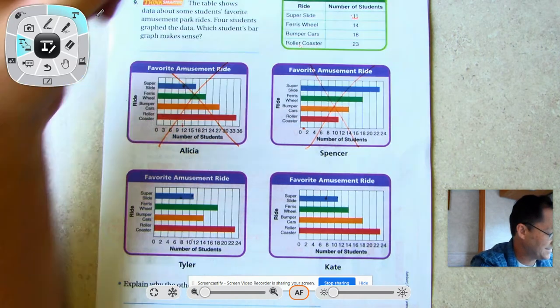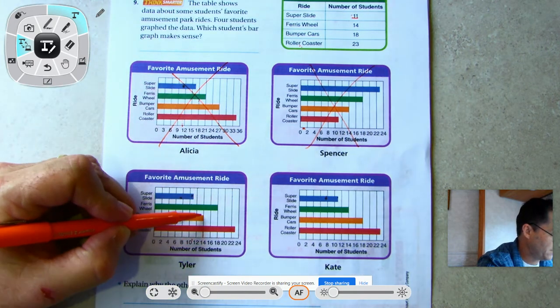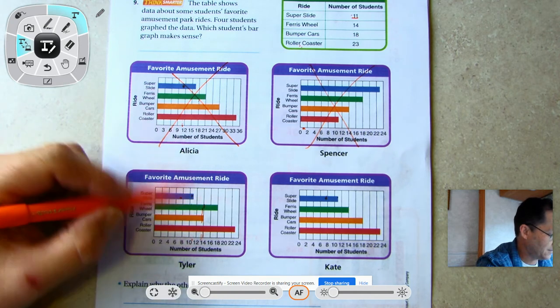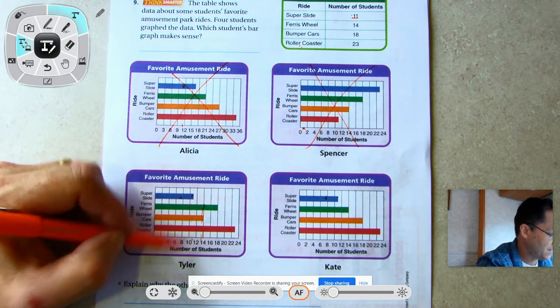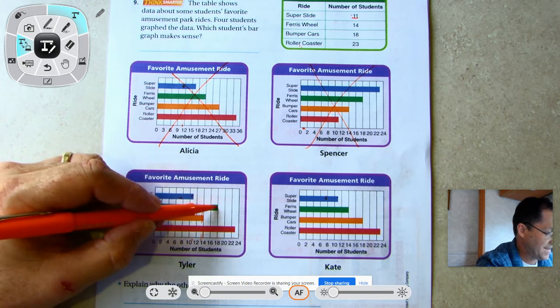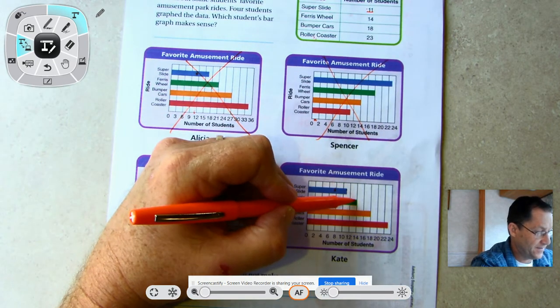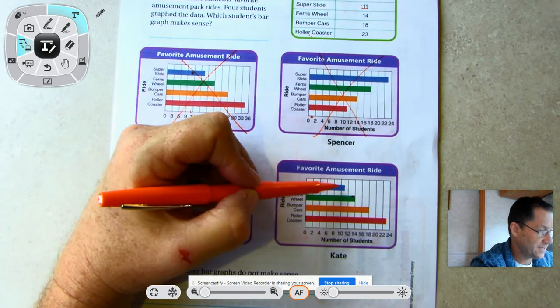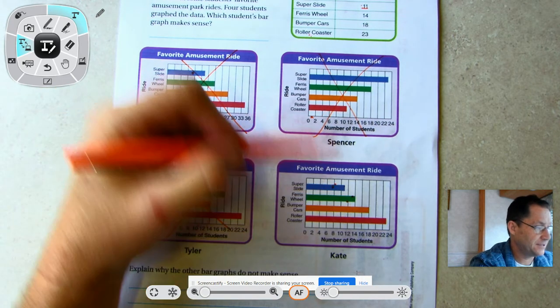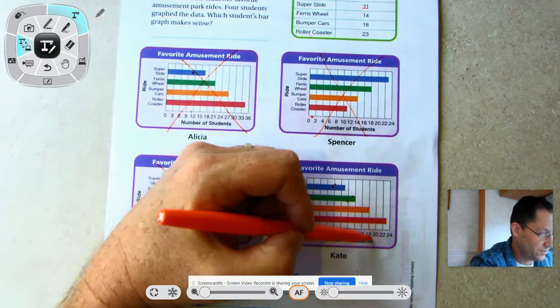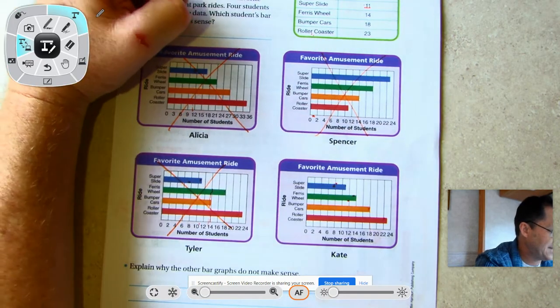Let's check bumper cars - 18? Yes. Roller Coaster? Yes. So Kate's. For instance, which student's bar graph makes sense? Kate's makes sense.